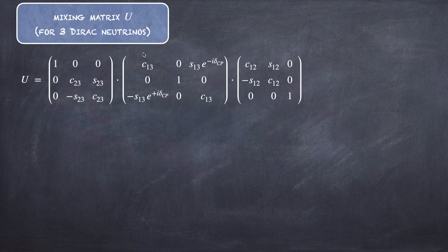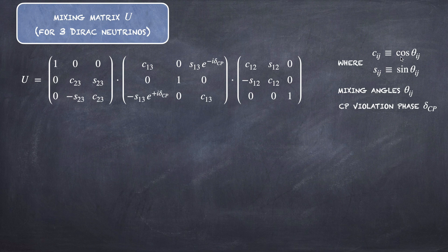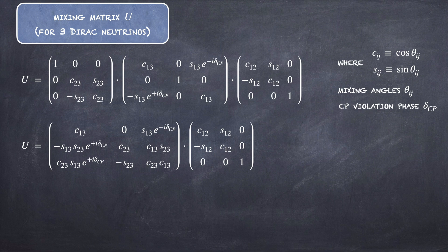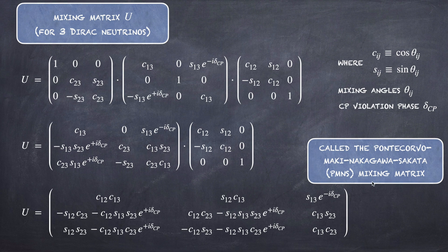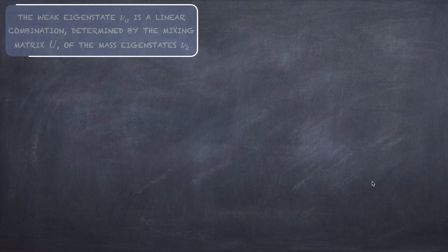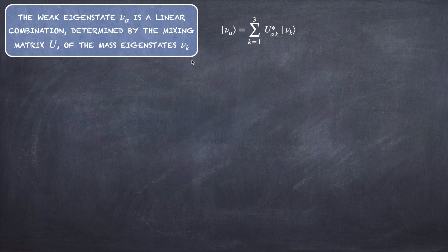The mixing matrix U can be conveniently parameterized as the product of three matrices. We are dealing with Dirac neutrinos, where C_ij and S_ij are the cosine and sine of θ_ij — the mixing angles — and δ_CP is the CP violation phase. If we calculate the product of these matrices, we can write U as the PMNS (Pontecorvo–Maki–Nakagawa–Sakata) mixing matrix.